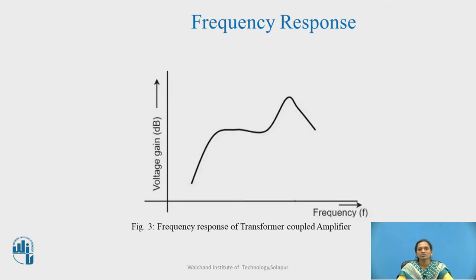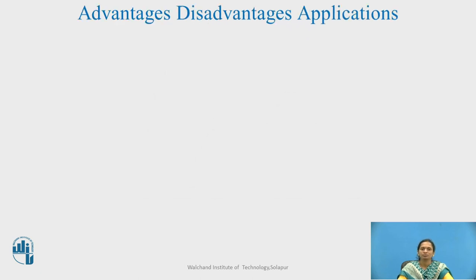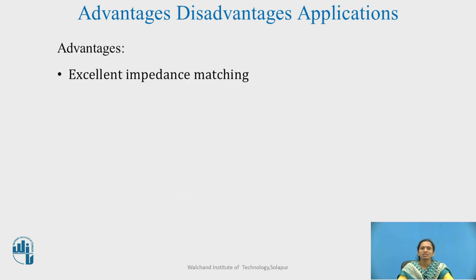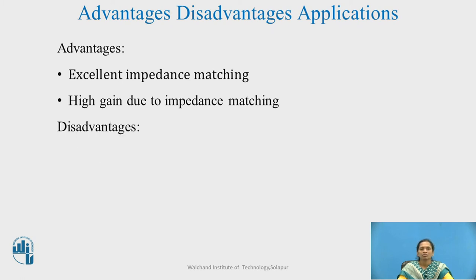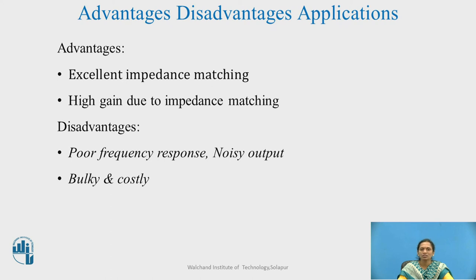The frequency response of the transformer coupled amplifier is not constant over the range of frequencies. Therefore, it is not suitable for high or low frequency values, though it provides proper impedance matching. Advantages include excellent impedance matching and high gain due to impedance matching. Disadvantages include poor frequency response, noisy output, and since a coupling transformer is used at each stage plus an input stage transformer, the circuit becomes complex, bulky, and costly.